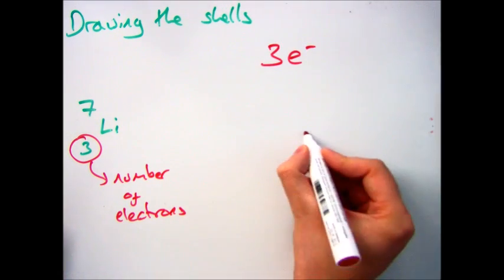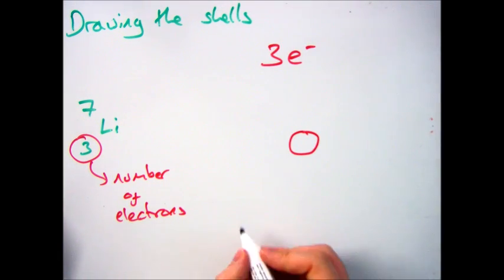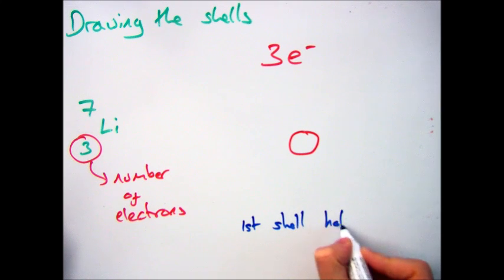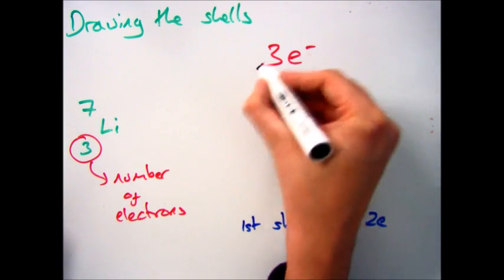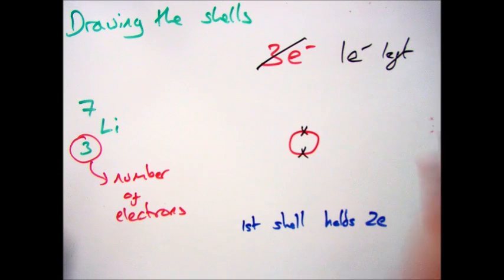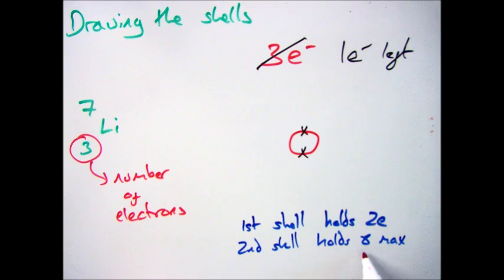And if we go back to our rules, we know that the first shell can hold a maximum of two, so we put those first two onto the first outer shell, leaving me with just one electron left. You should also remember that the second shell can hold eight electrons, however, we don't have eight to put in there now, we only have the one, but we can only put what we've got. So we put that one electron in there.